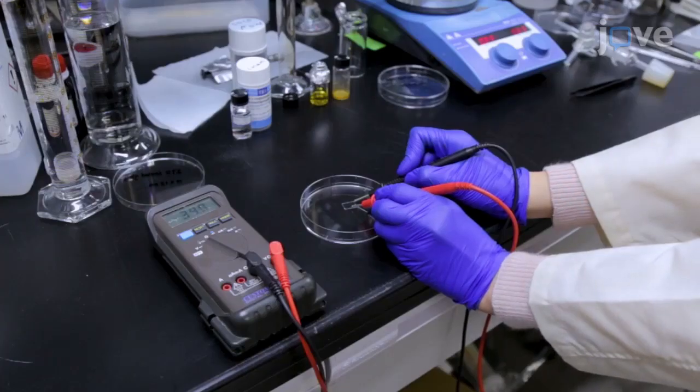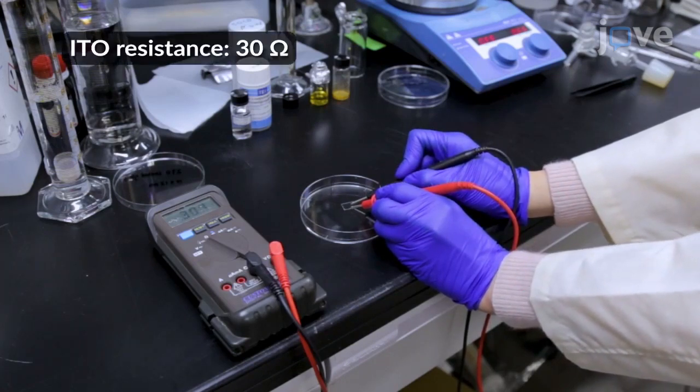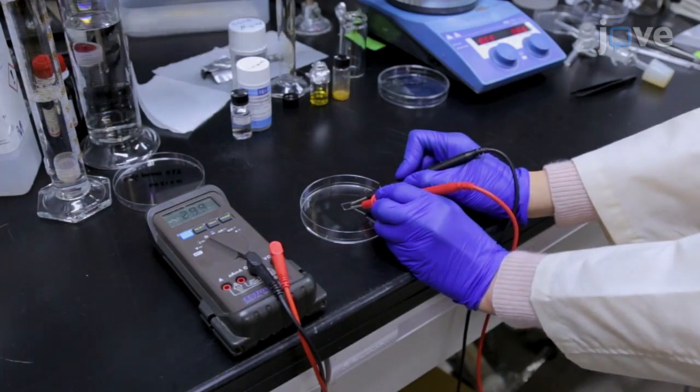Next, to begin preparing the ITO glass, cut a 10x10 mm piece of glass patterned with ITO in the desired shape, and a 10x12 mm piece of standard ITO glass.